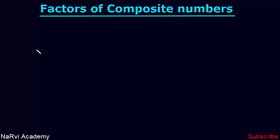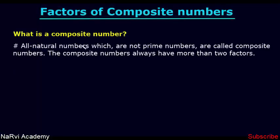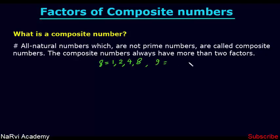Let's first understand what is a composite number. All natural numbers which are not prime numbers are called composite numbers. Composite numbers always have more than two factors. For example, the number 8 has four factors: 1, 2, 4, and 8. The number 9 has three factors: 1, 3, and 9. You can see 8 is not a prime number; similarly, 9 is also not a prime number. Hence these numbers are composite numbers.